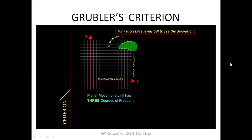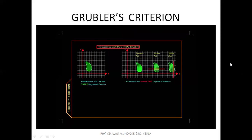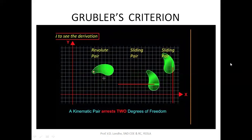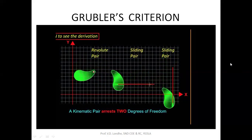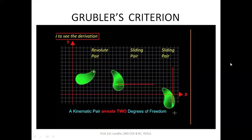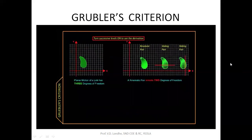Every additional link brings three extra degrees of freedom. Now let us see the effect of adding a kinematic pair. We have constrained the body's motion by adding a kinematic pair — a revolute pair, a sliding pair, and so on. The body is now capable of only rotation, or only translation along x, or only translation along y. Out of the three degrees of freedom, the pair has absorbed two. So every kinematic pair added removes two degrees of freedom.